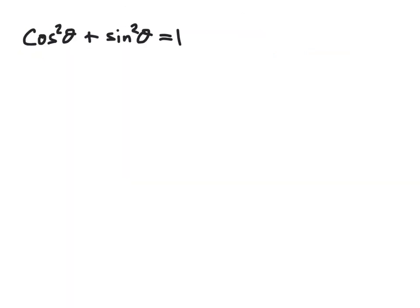So let's take a look at the Pythagorean identity cosine squared theta plus sine squared theta equals 1. Of course, we know if we have this left-hand side — cosine squared plus sine squared — we can replace it with 1. But we can rearrange this equation. For example, we could subtract sine squared from both sides, and we would obtain cosine squared theta equals 1 minus sine squared, which means we could either replace cosine squared with 1 minus sine squared, or replace 1 minus sine squared with cosine squared.